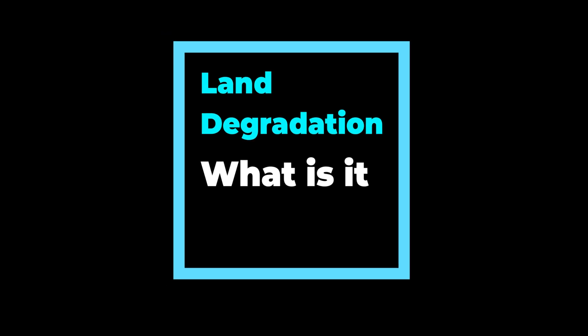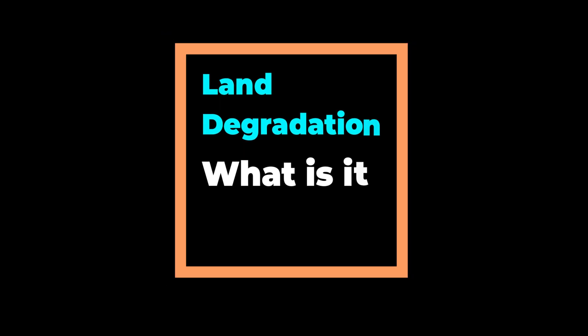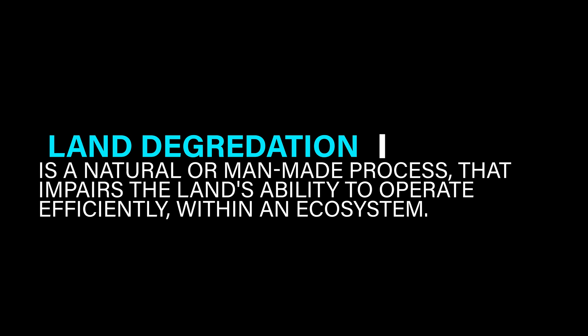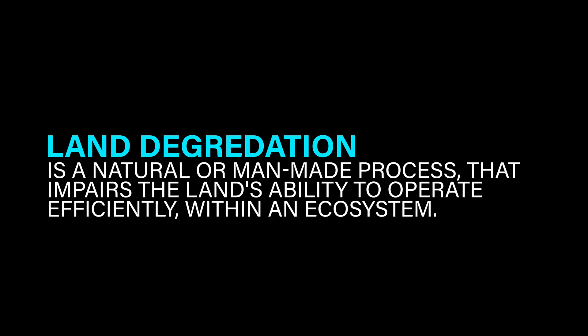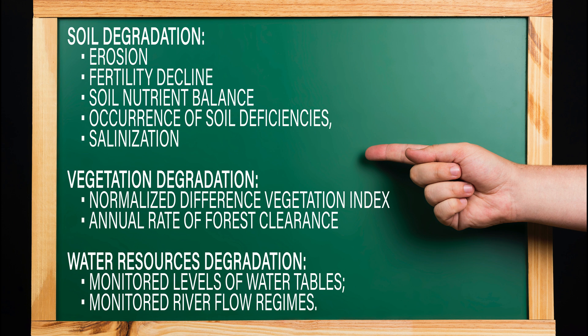Land degradation is a natural or man-made process that impairs the land's ability to operate efficiently within an ecosystem. Different types of land degradation include various types of soil degradation, vegetation degradation, and water resources degradation.